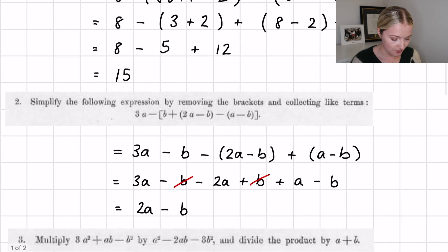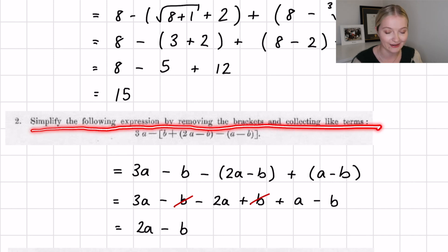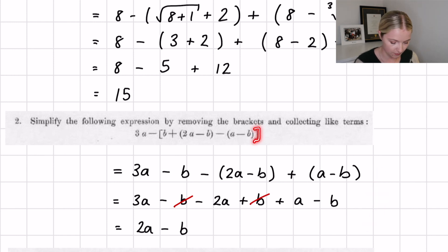Now question 2 is a very nice question. It just says simplify the following expression by removing the brackets and collecting like terms. So we have to remove brackets here. I've done it step by step here. All I did first was I removed these brackets first, then I removed these brackets, and then we just did some simplifying, collecting a's and b's, and we get that the answer is 2a minus b.